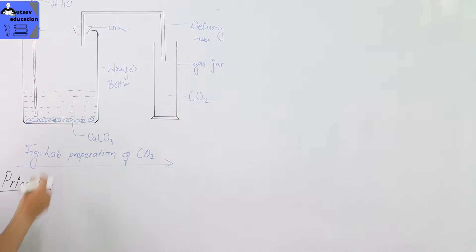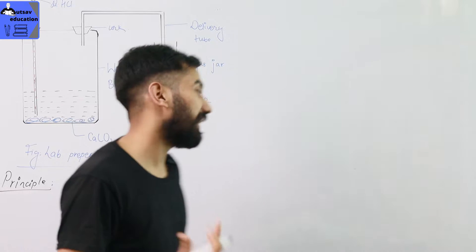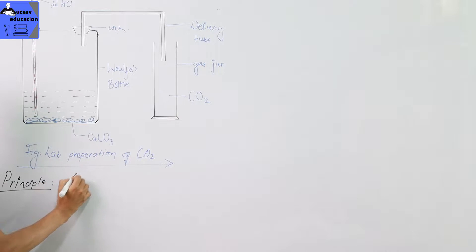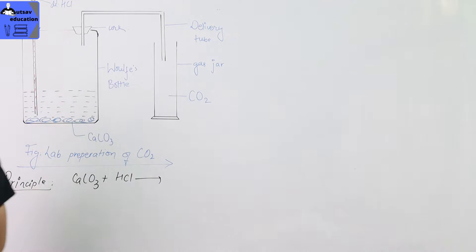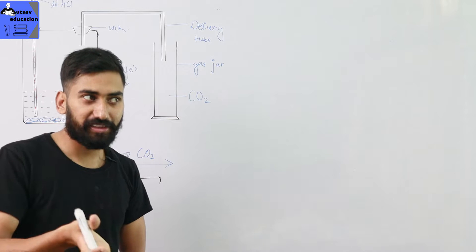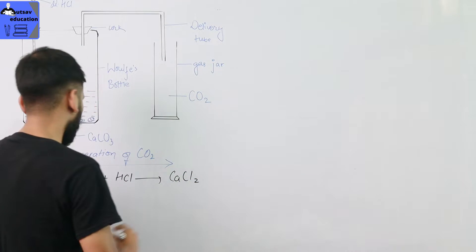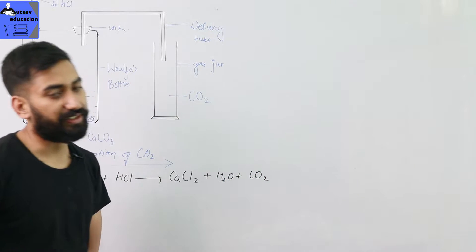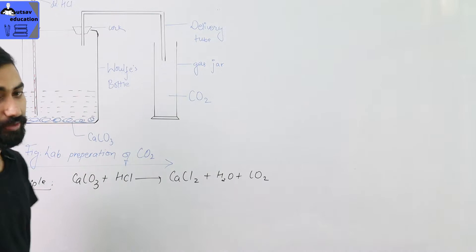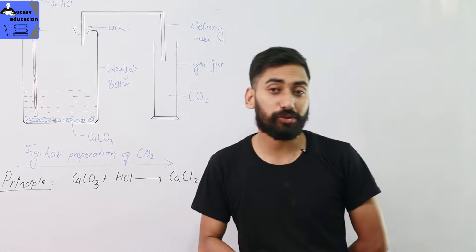For example, the chemical compounds are HCl and calcium carbonate. Calcium carbonate is also called marble chips. The principle reaction for this lab preparation is: calcium carbonate plus HCl — the carbonate reacts with acid — to give calcium chloride, water, and carbon dioxide. This is the principle reaction.